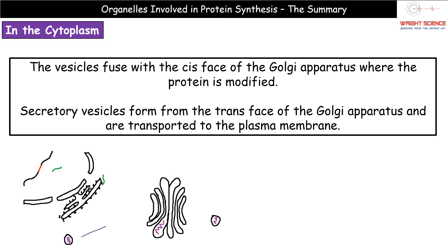Once these little vesicles arrive at the Golgi apparatus, they fuse with the cis face. This is our cis face of the Golgi on this side here. Once the protein is within the Golgi apparatus, this is where protein modification happens — if we think back to our previous video on our membrane-bound organelles. Once it's been modified and passed through our Golgi, it's then going to create the secretory vesicles from the trans face. This is our trans face on this side.